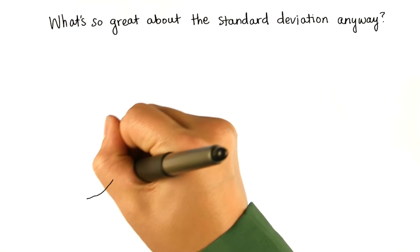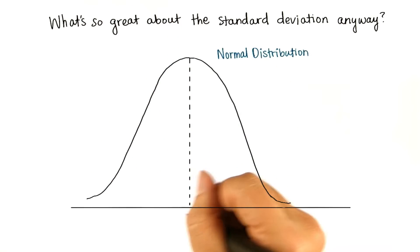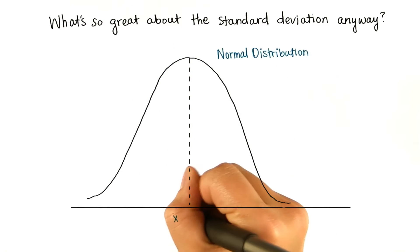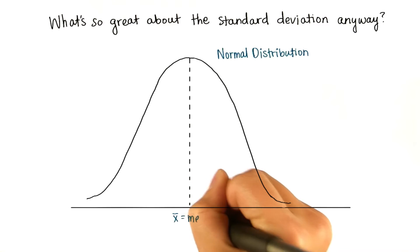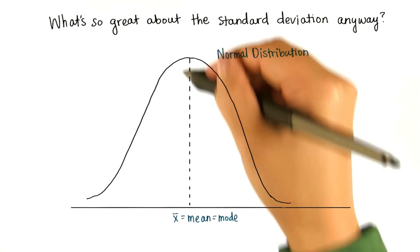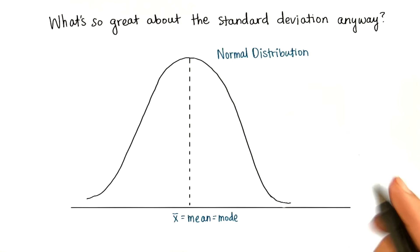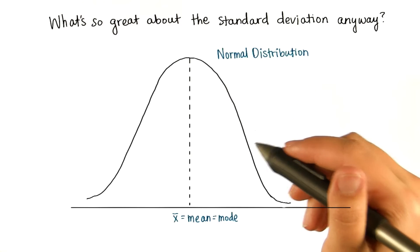It turns out that with a normal distribution, and if you remember, that's where the mean equals the median equals the mode, right in the center of the distribution, which is symmetrical, the standard deviation has great properties.